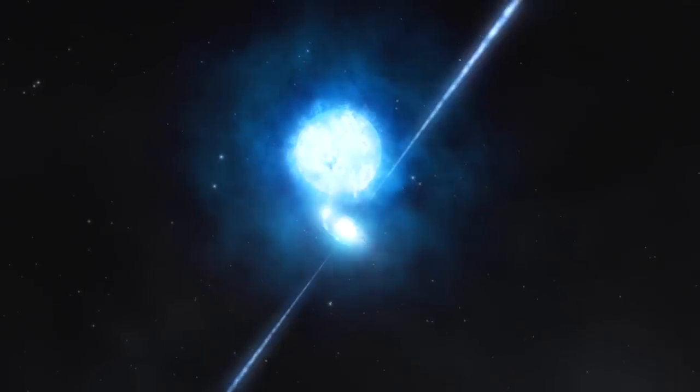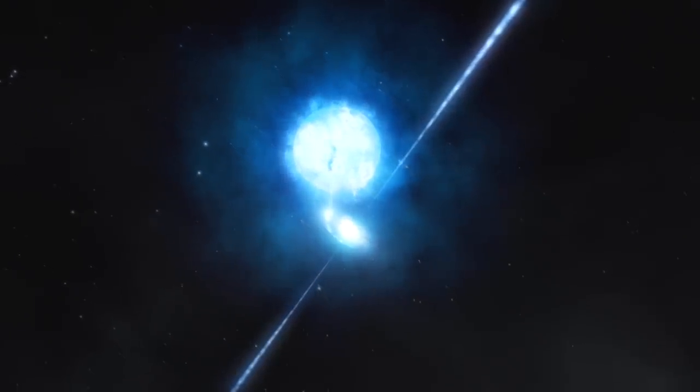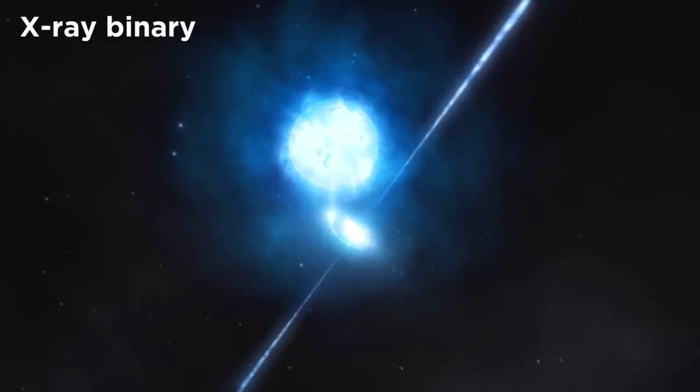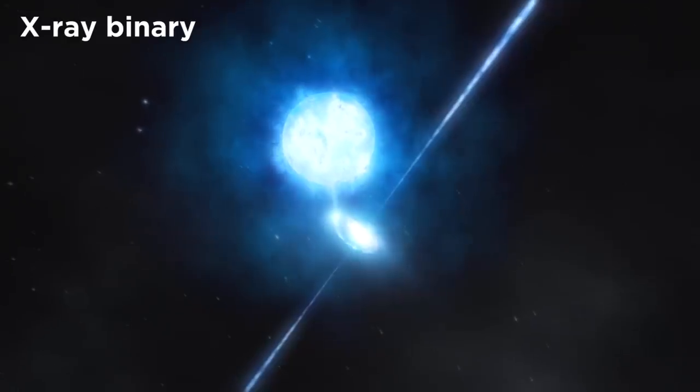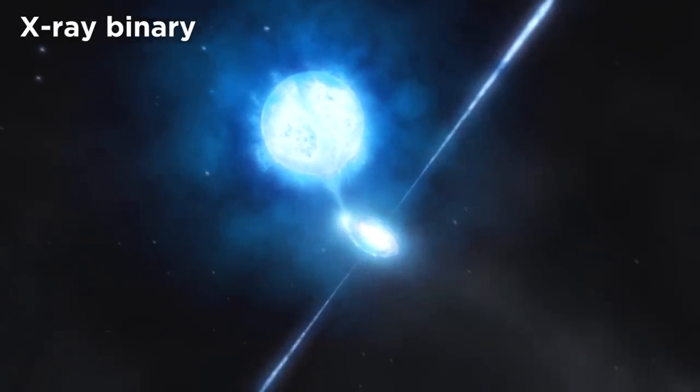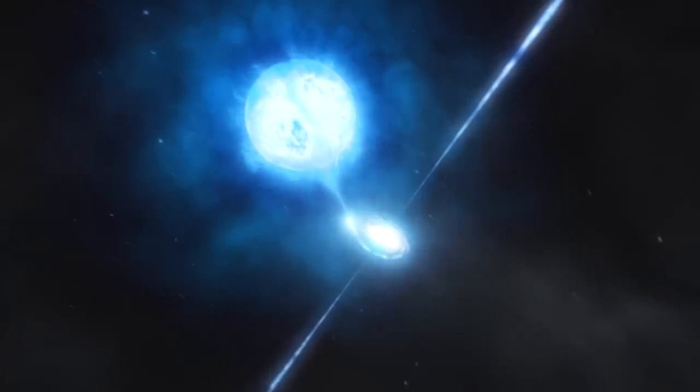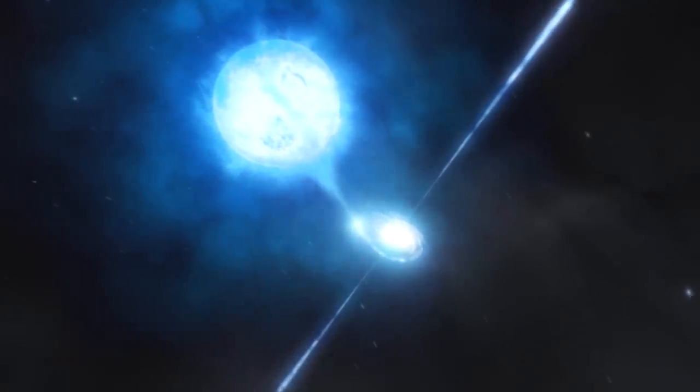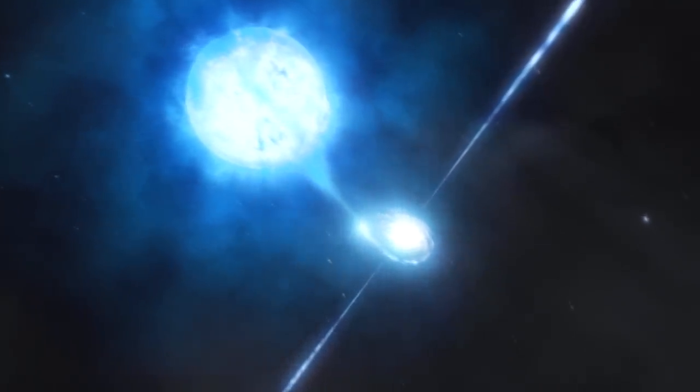If instead the compact object is a neutron star or black hole, this is called an X-ray binary, which can be either a low-mass or high-mass X-ray binary depending on the mass of the donor star, which is the other star in the system feeding the compact object with material.